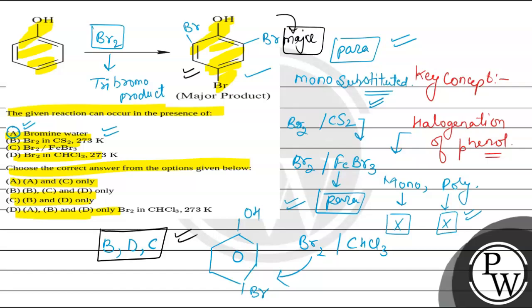So hum keh sakte hai hai, is mein major product ye rahega. So overall we can say that option B, that is B, C and D, these three reagents are the only reagents which can transform this reaction. So therefore option B is the right answer.